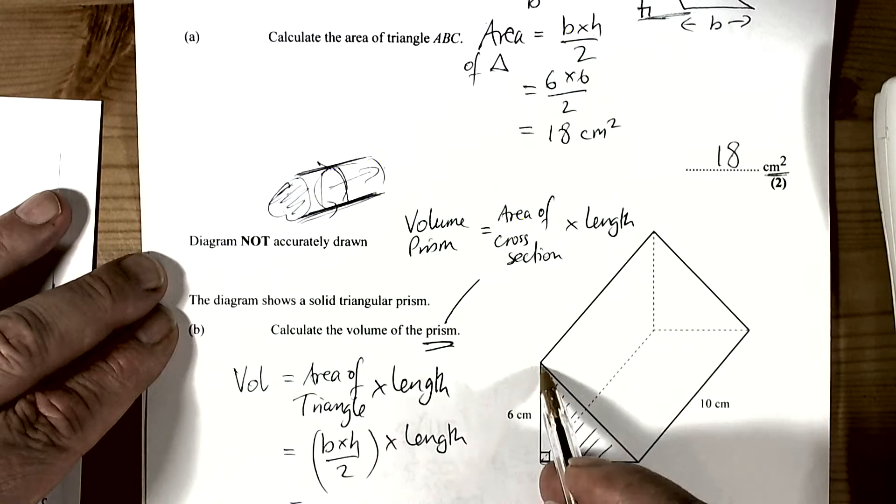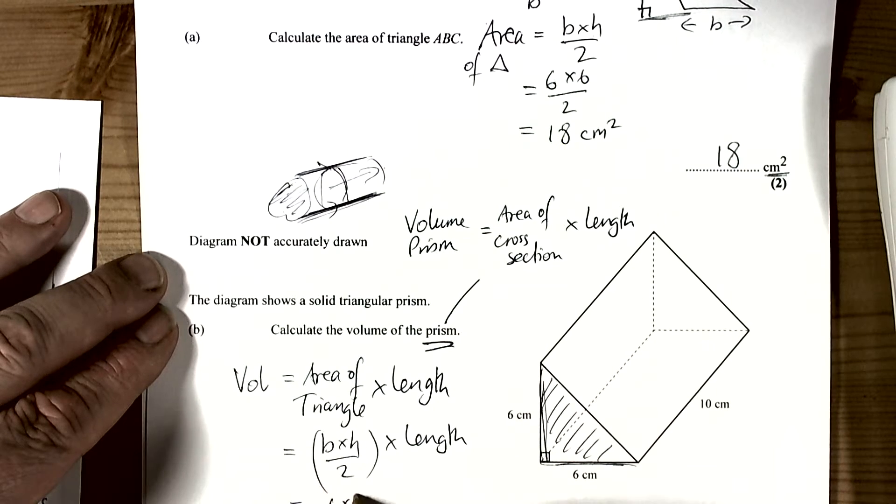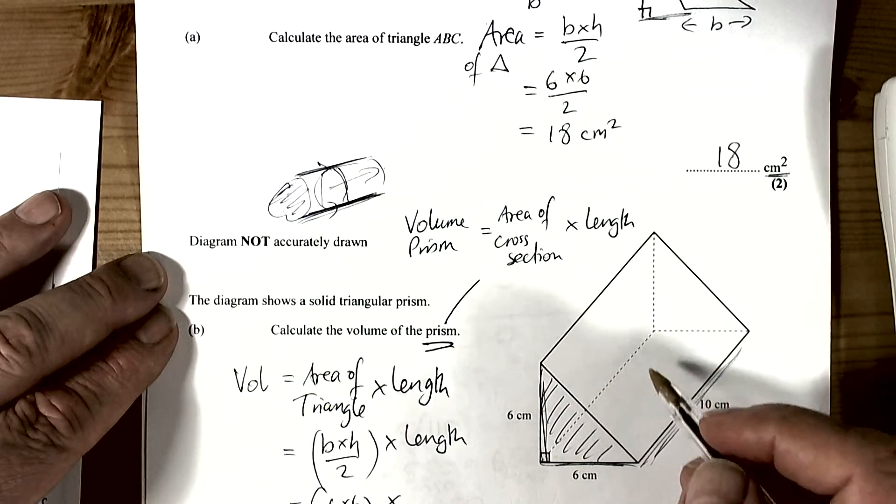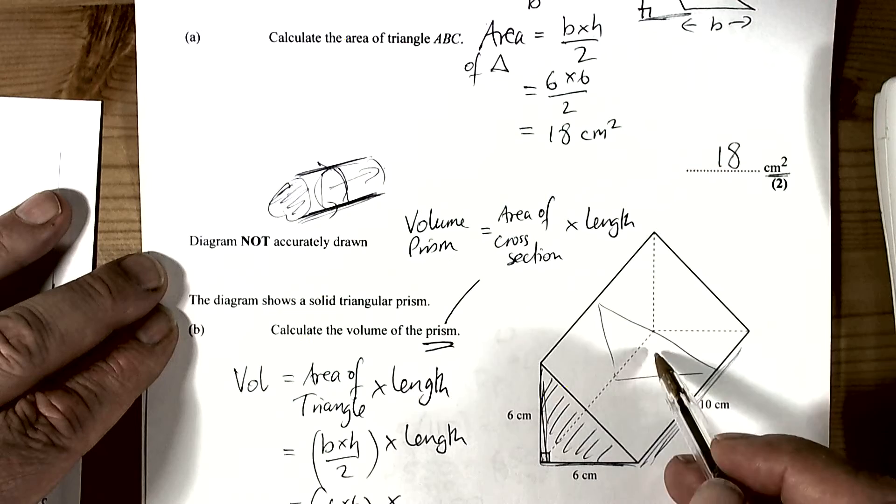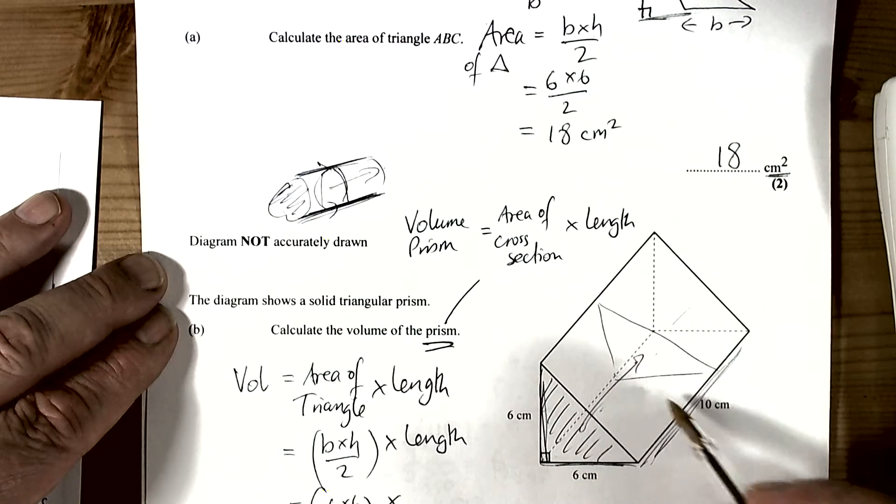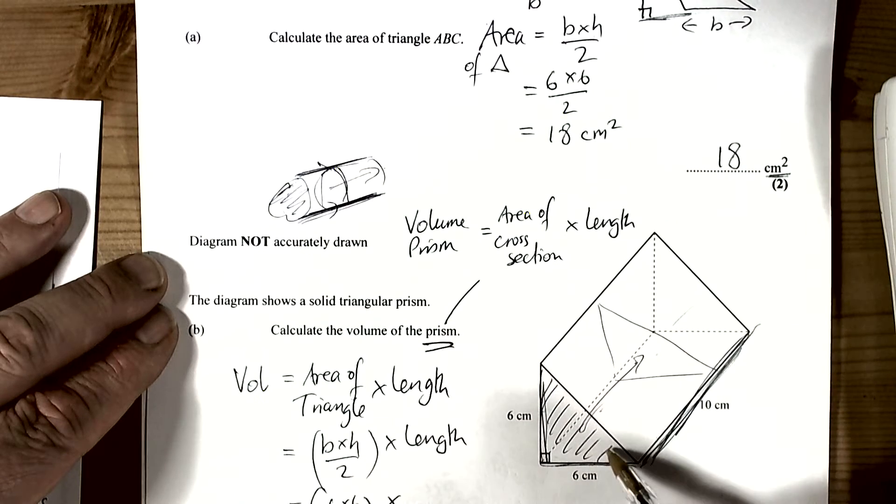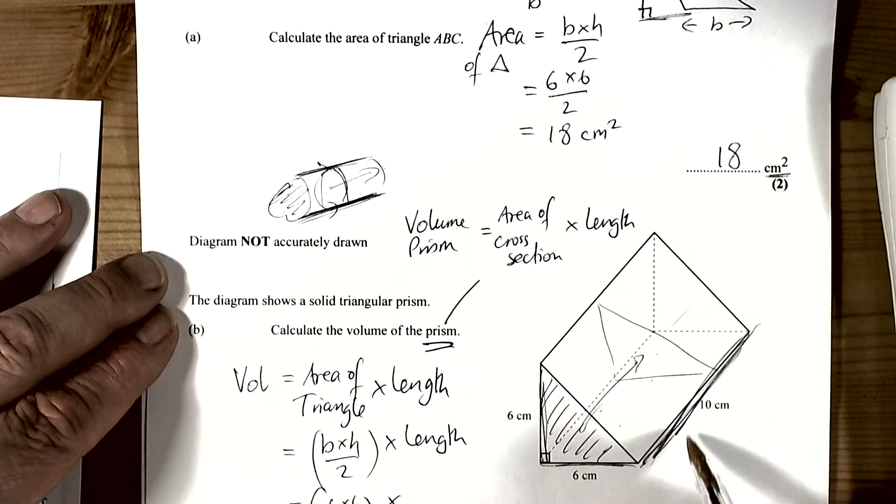Now the base is 6, the vertical height is 6, so 6 times 6 over 2 times the length. Well, the length of this is 10. What that means is that if we cut anywhere along there, we'd see the same triangle throughout. So that's why that's the length—because the cross section should be cut anywhere along the length and still see the same end faces.